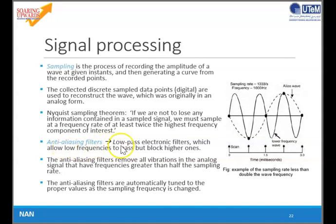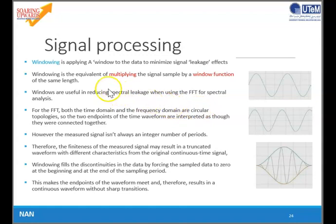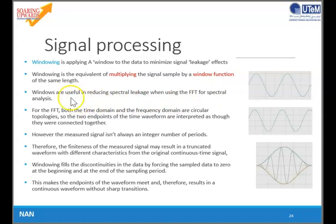Anti-aliasing filters are low-pass electronic filters which allow low frequencies to pass but block higher ones. To convert from analog to digital, we use a microprocessor, and the signal must be converted into digital for further processing. Windowing is applied to the data to minimize signal leakage effects. Windowing is the equivalent of multiplying the signal sample by a window function of the same length. It is useful in reducing spectral leakage when using FFT for spectral analysis. Examples of window functions include Hanning, Hamming, and others.